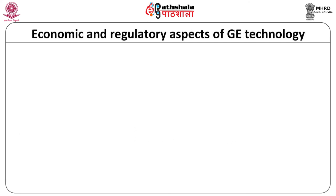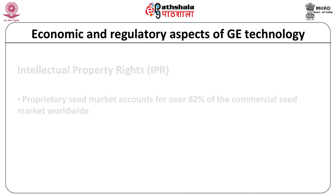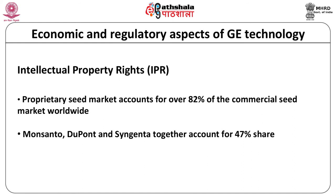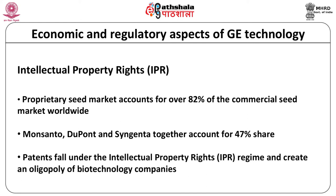Genetic engineering is an expensive technology and most of the research and development of genetically engineered crops is carried out by technology companies like Bayer in Germany, DuPont in the US, and Syngenta in Switzerland. The proprietary seed market subject to exclusive monopoly accounted for over 82 percent of the commercial seed market worldwide, of which Monsanto, DuPont, and Syngenta together accounted for 47 percent. GE crops have thus revolutionized agriculture, with generation and distribution of seeds to farmers taken over by a few large companies worldwide. Biotechnology companies are able to patent the technology under the IPR regime and hence control pricing and distribution of seeds.